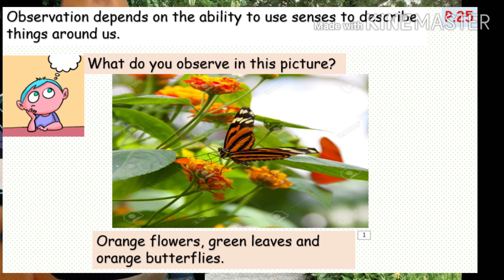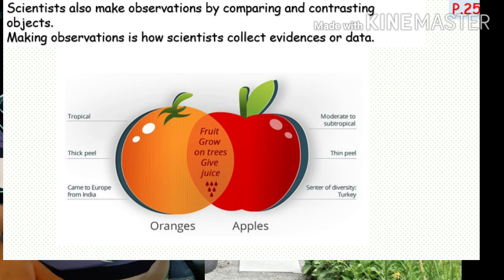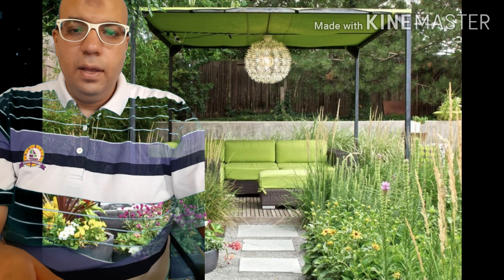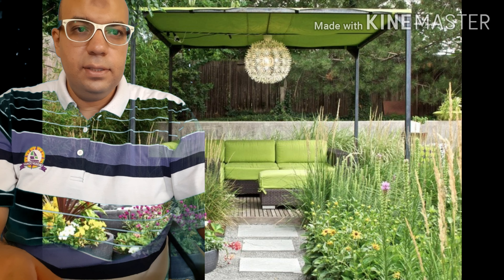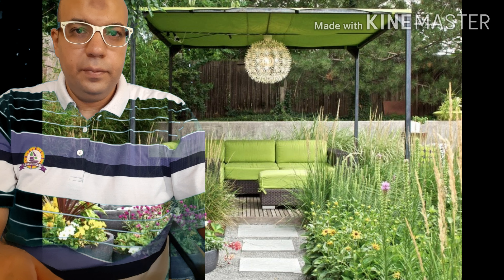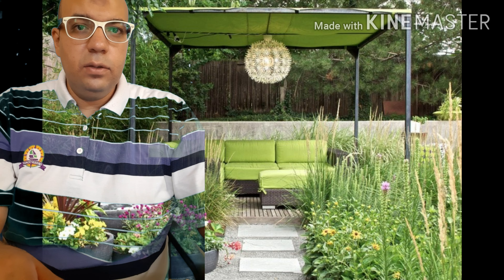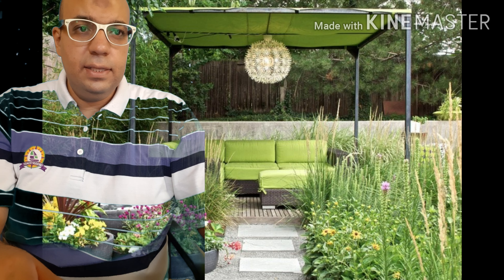Observation depends on the ability to use senses to describe things around us. In the picture you can observe orange flowers, green leaves, and orange butterflies. Scientists make observations by using their senses and by comparing and contrasting things. A scientific inquiry first starts by making observations, then scientists ask questions based on what they observe. Making observations is how scientists collect evidence or data.